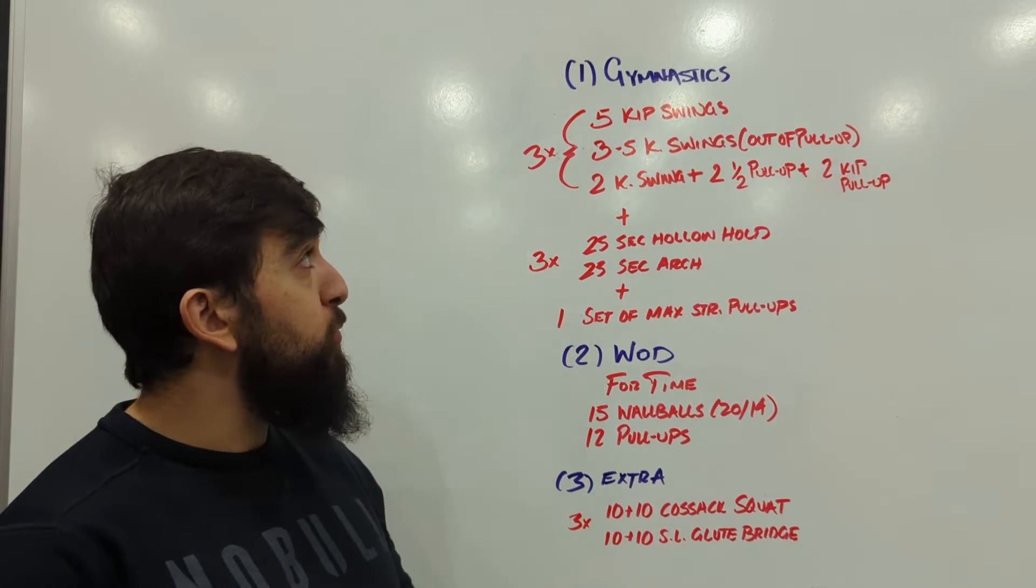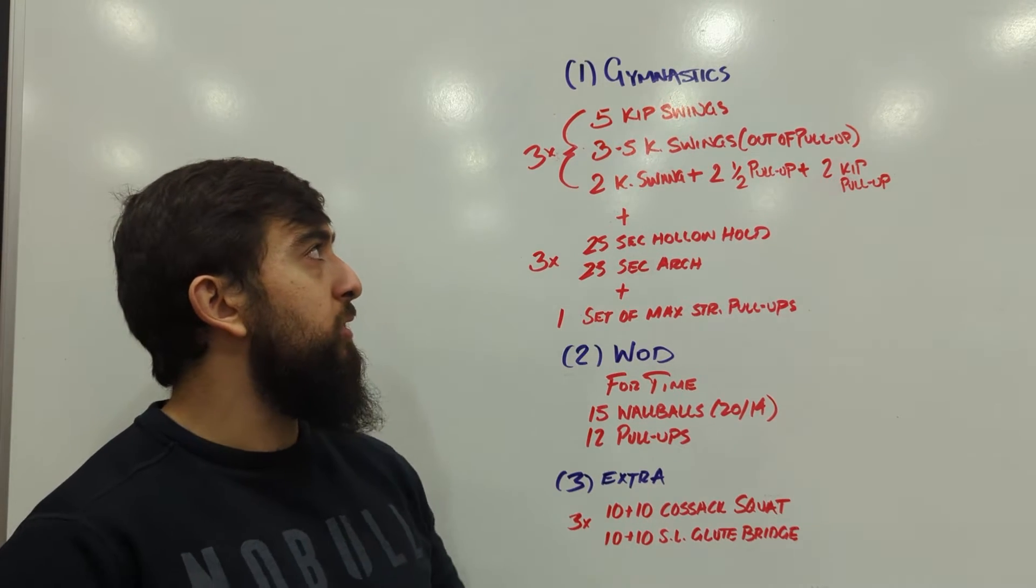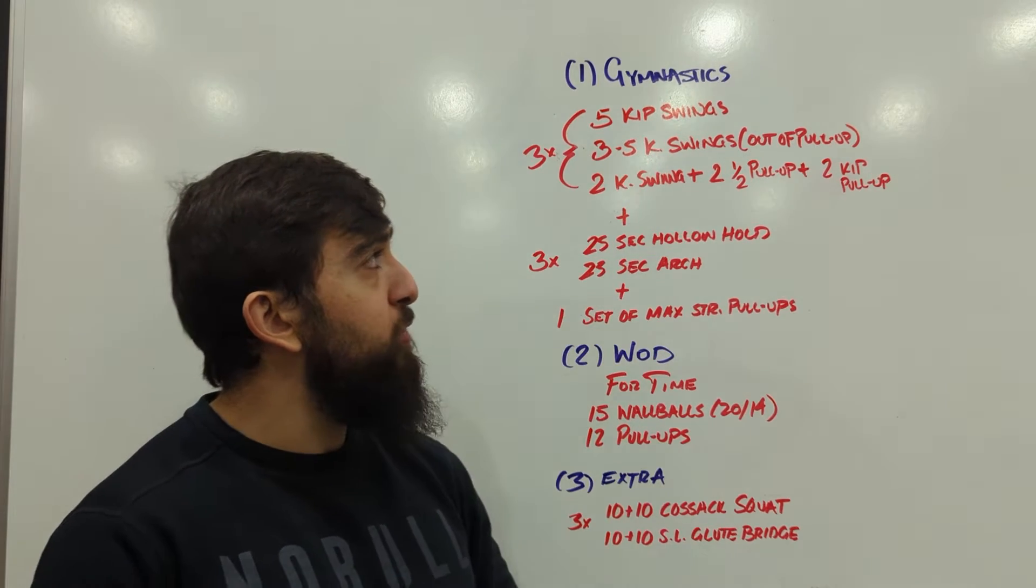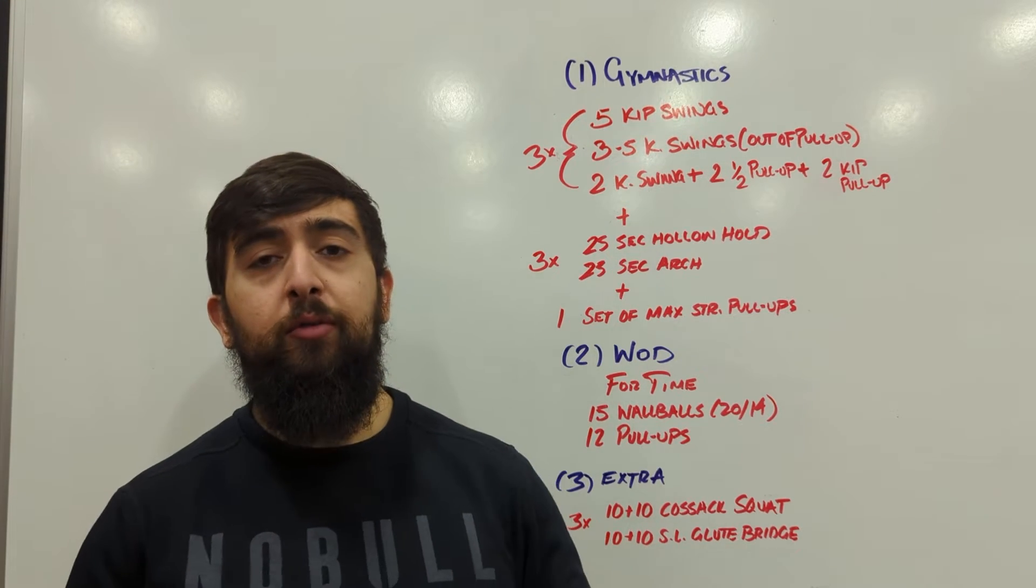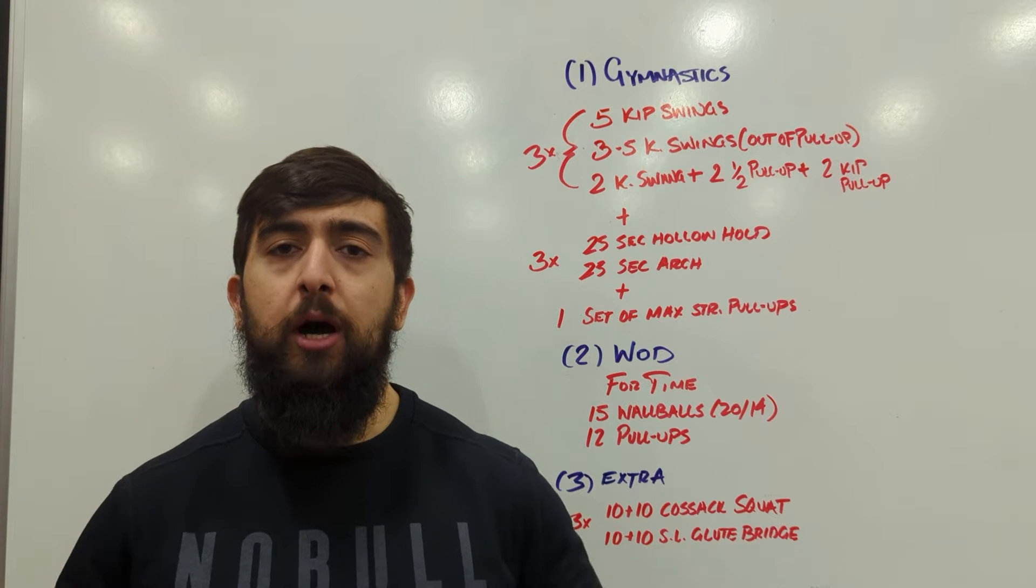I'm going to divide it up into its pieces. We're going to start off with some kip swing work, so five kip swings to start off with. Then the next movement is three to five kip swings out of a pull-up.